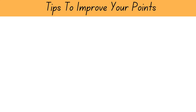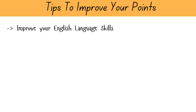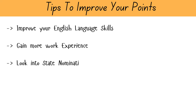Here are a few tips for improving your points. Improve your English language skills — a higher IELTS score can give you up to 20 points, so target the highest band requirement in your English test. If possible, gain more work experience, as additional years can add more points. For example, if you have 4 years of experience, waiting another year to get an additional 5 points can help your application. Also look into state nomination options, as this can provide an extra 5 points for subclass 190 or 15 points for subclass 491, and may increase your chances.